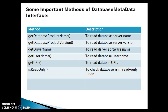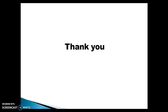I have listed a few important methods available in the DatabaseMetaData interface — there are many more you can explore in the documentation. To get the database product name call getDatabaseProductName(); for the server version call getDatabaseProductVersion(); getDriverName() returns the driver name; getUserName() returns the database user name; getURL() returns the database URL; and isReadOnly() checks whether the database connection is in read-only mode.